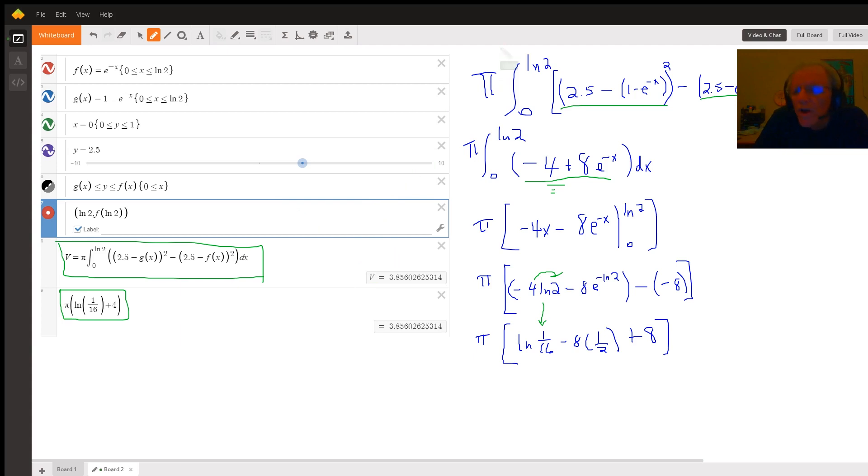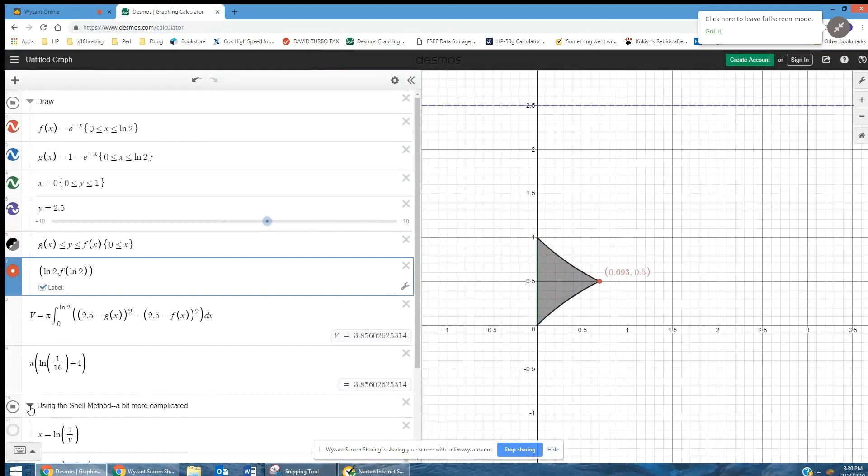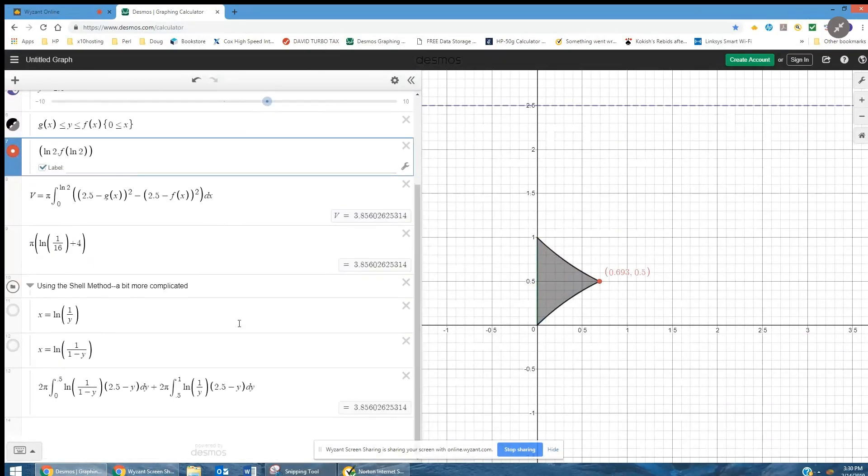And I will very quickly take us to the Desmos online graphing calculator so that you can see what it looks like if you're going to use the shell method. You first have to solve each of those functions for x in terms of y, which there it is. And then if you're going to use the shell method, your shells will be parallel to the axis of revolution. So you're going to have different expressions for the height of the shell. And that's what these are right here. The log of 1 over 1 minus y is the height of a typical shell in the interval along the y-axis from 0 to 0.5.